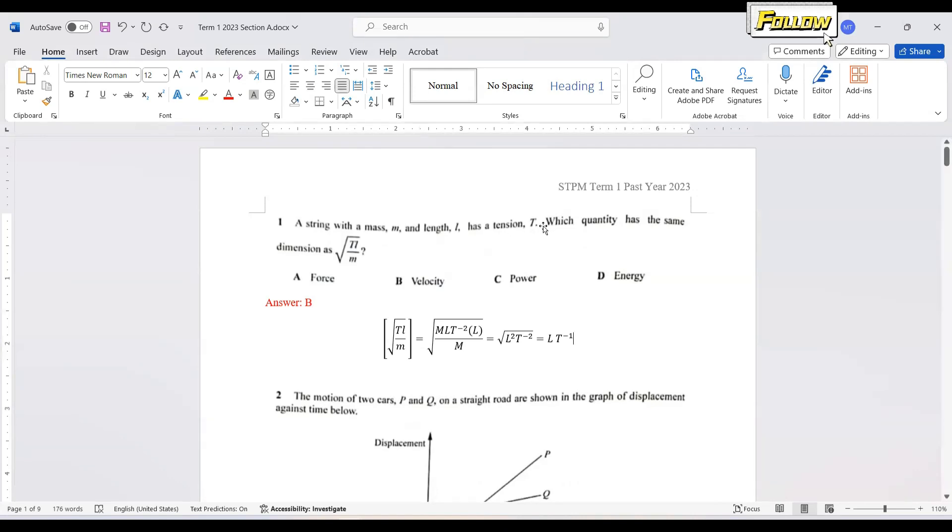For force, it is equal to M A, so the unit should be kilogram meter per second square. So kilogram is mass, and then meter per second square is L per T square. Put in all those dimensions and simplify the expression, you should be able to obtain L per T, which is meter per second, the velocity. So answer should be B in this question.